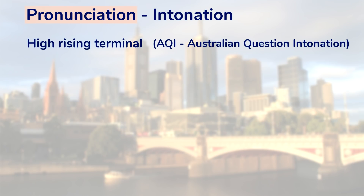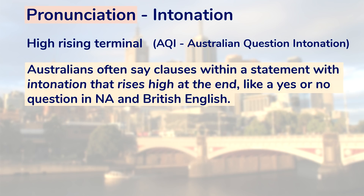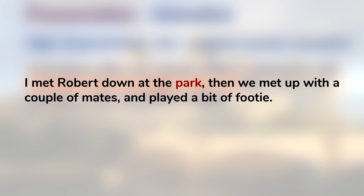There are some characteristic features of intonation in Australian English. One such feature is called high-rising terminal — Australians often say clauses within a statement with intonation that rises at the end, like a yes-or-no question in North American or British English. Example: 'Met Robbo down the park... then we met up with a couple of mates and played a bit of footy.' This kind of intonation is standard in Australia, and you might hear it sometimes in North America and the UK too, though many find it annoying — it's often referred to as up-talk.